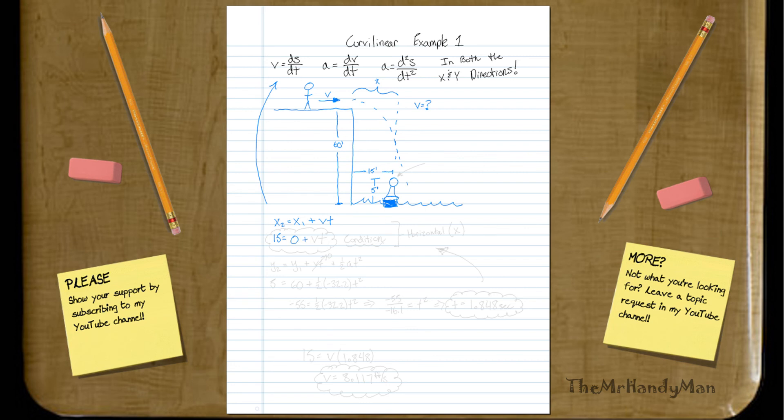And how quickly is he going to jump off? And that's going to be V, and then T, we don't know the time either. So this is going to be essentially our condition, that he made it. So I'm just going to call this our condition. It's going to be one of our equations that we're going to use.